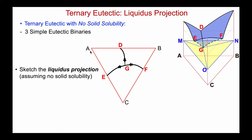Here's the liquidus projection. If we look at the AB binary, D is the eutectic liquid in that binary; F is the composition of the BC eutectic liquid; and E is the one for AC. These are the three eutectic valleys, and the confluence is at G, the eutectic liquid.